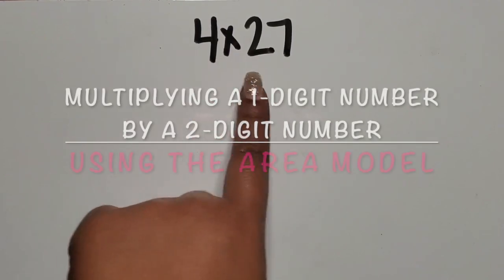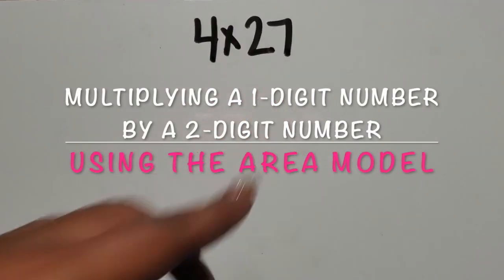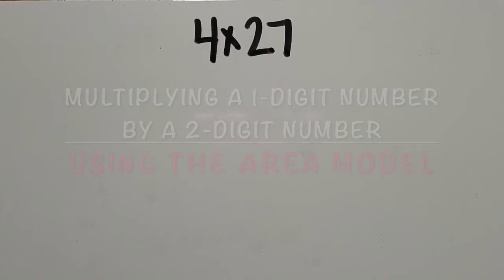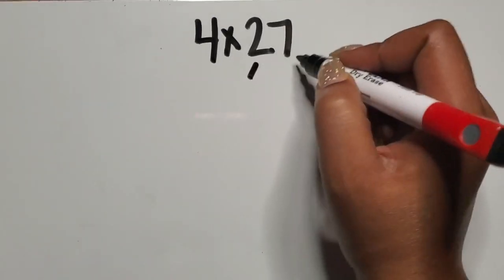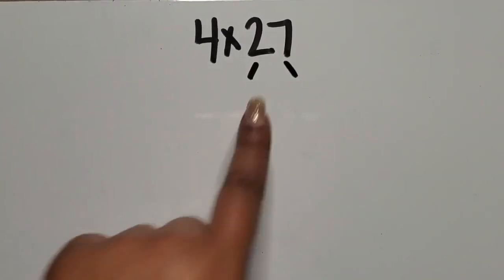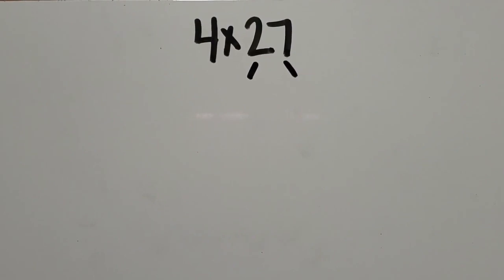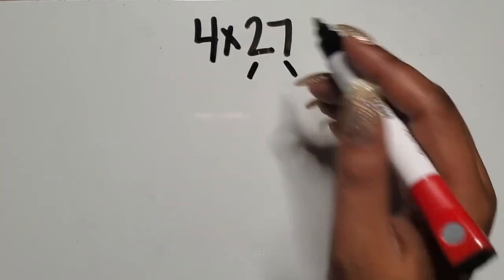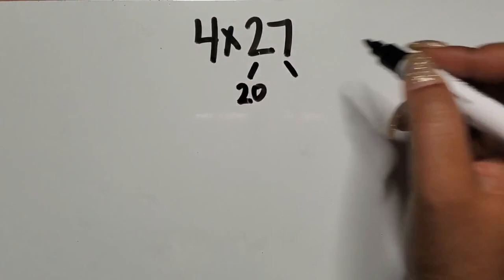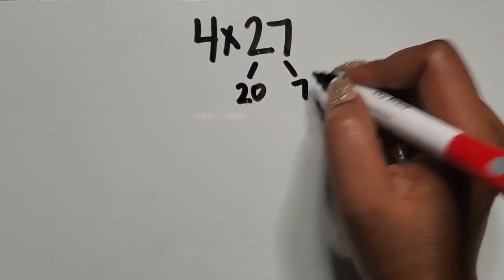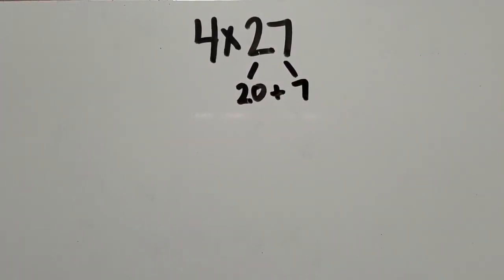We are going to multiply a one-digit number by a two-digit number using the area model. So I first want to break apart or decompose my two-digit number based on its place value. I know the two is in the tens place and it represents 20, and the seven is in the ones place and it represents 7.